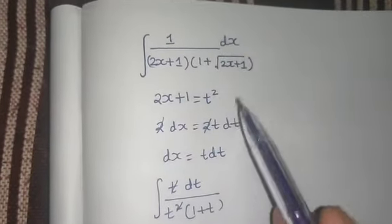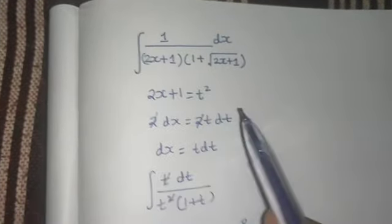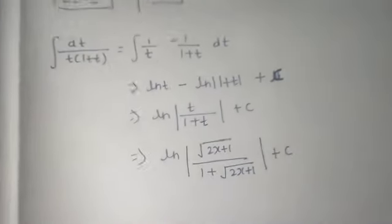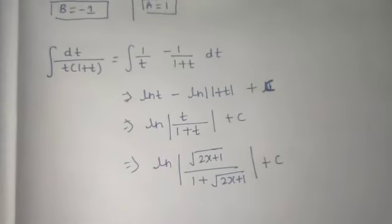This is your final answer. I hope you understood this. We just assumed 2x plus 1 as t squared and used partial fractions. The rest was as easy as it looks.